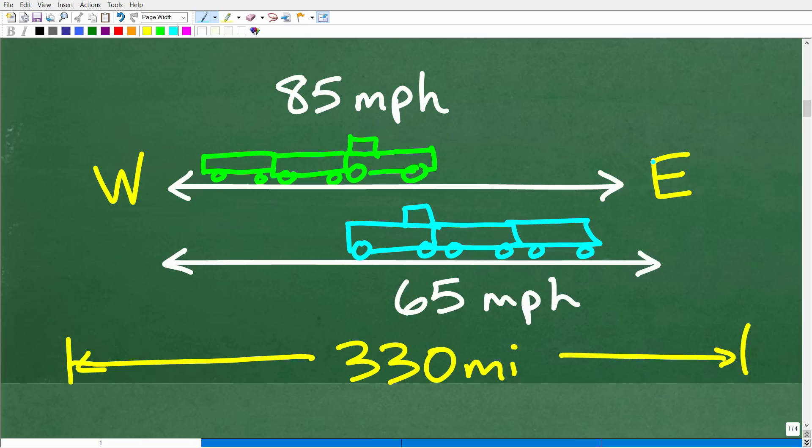It doesn't make a difference which is which in terms of the one that's going 85 miles per hour or the one that's going 65 miles per hour. That's not essential in our problem, but we need to visualize the situation, right? So these two trains are going to be passing one another. One's going east, one's going west, and then they have these respective speeds.